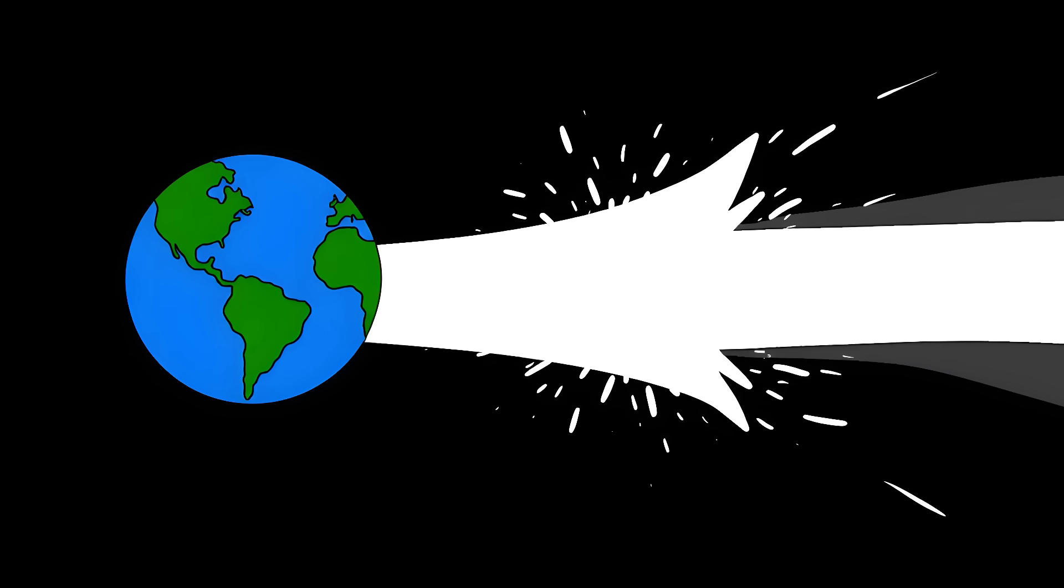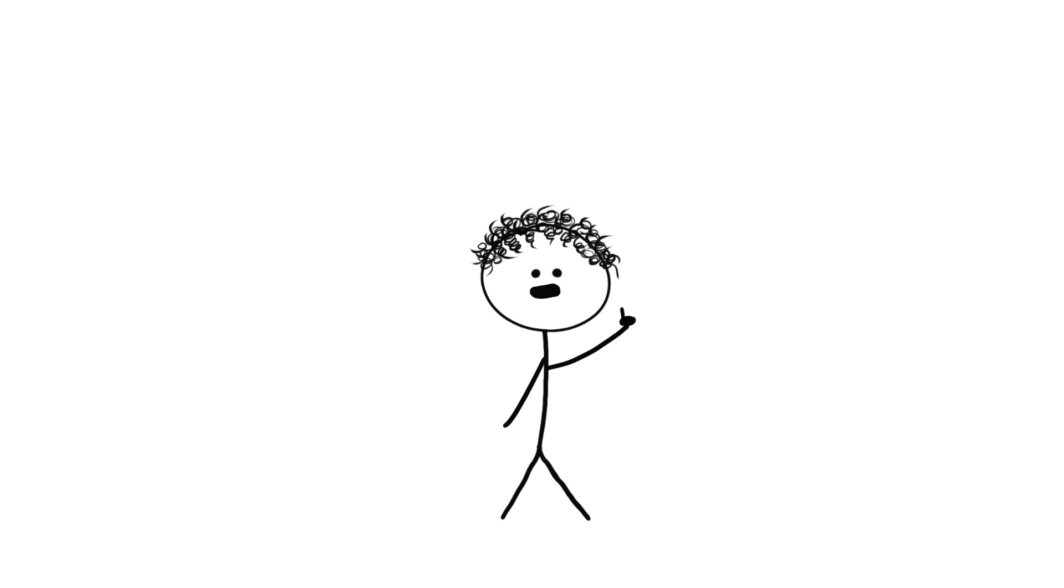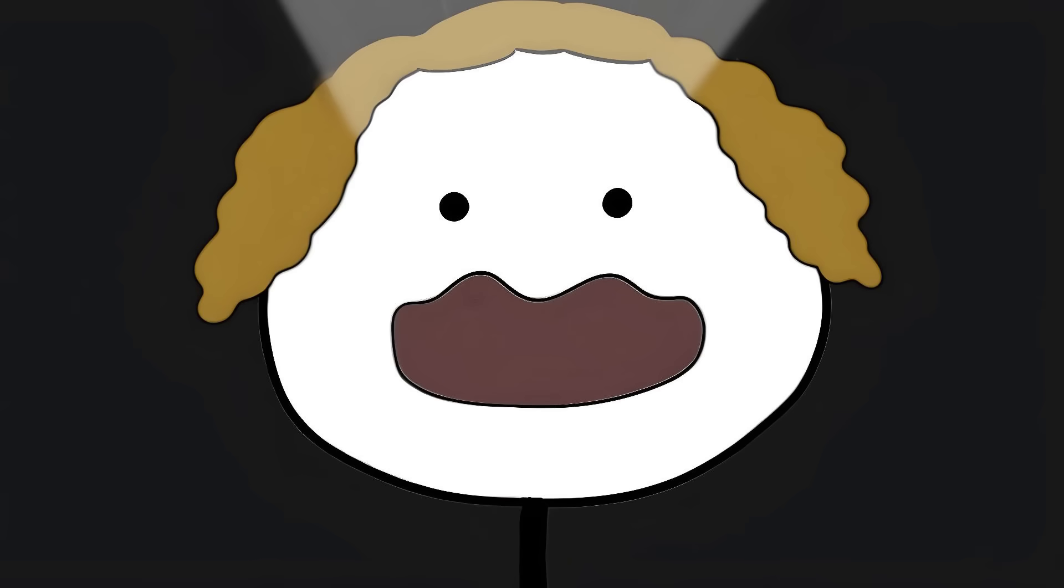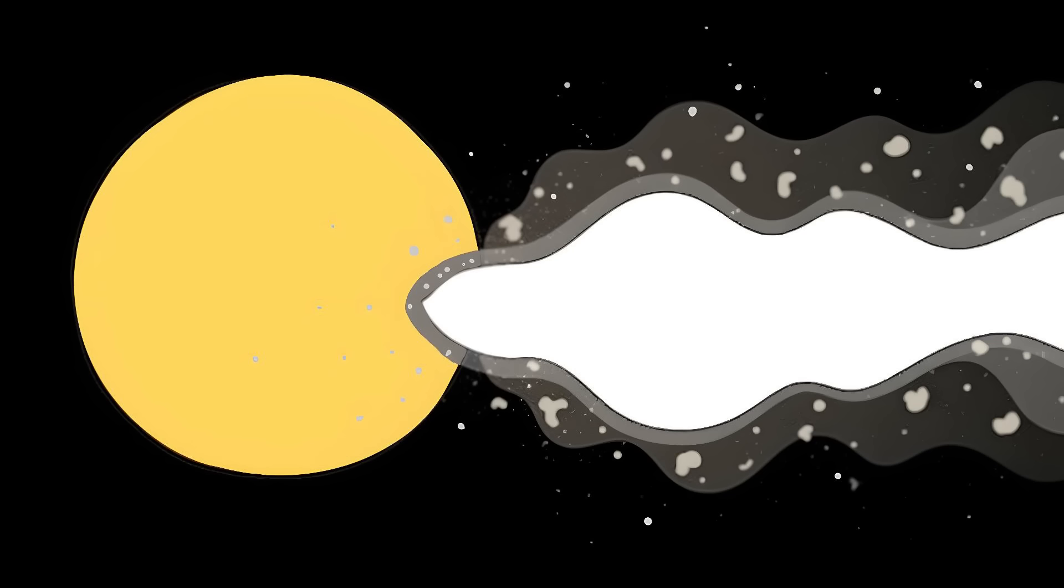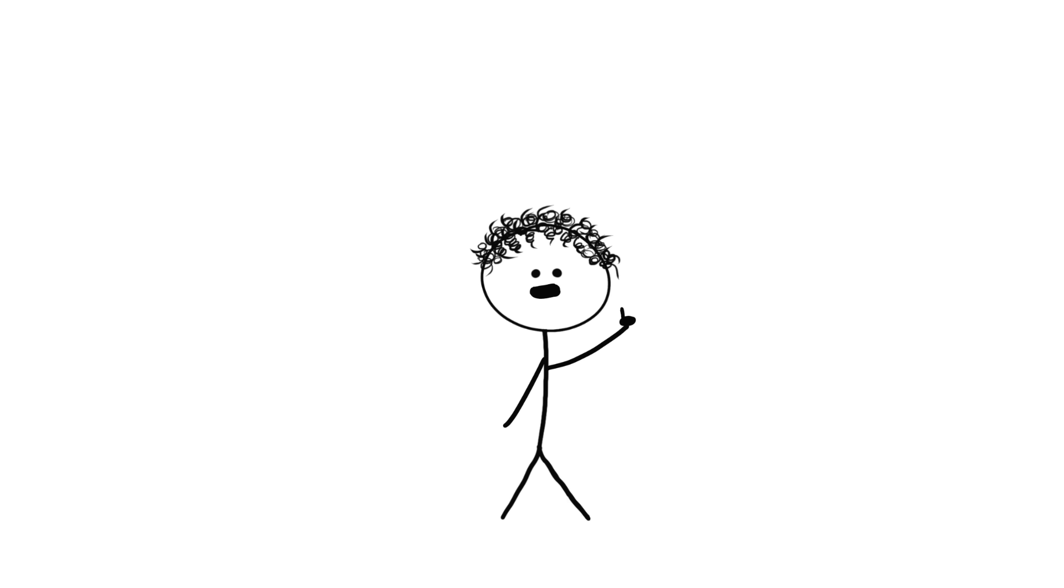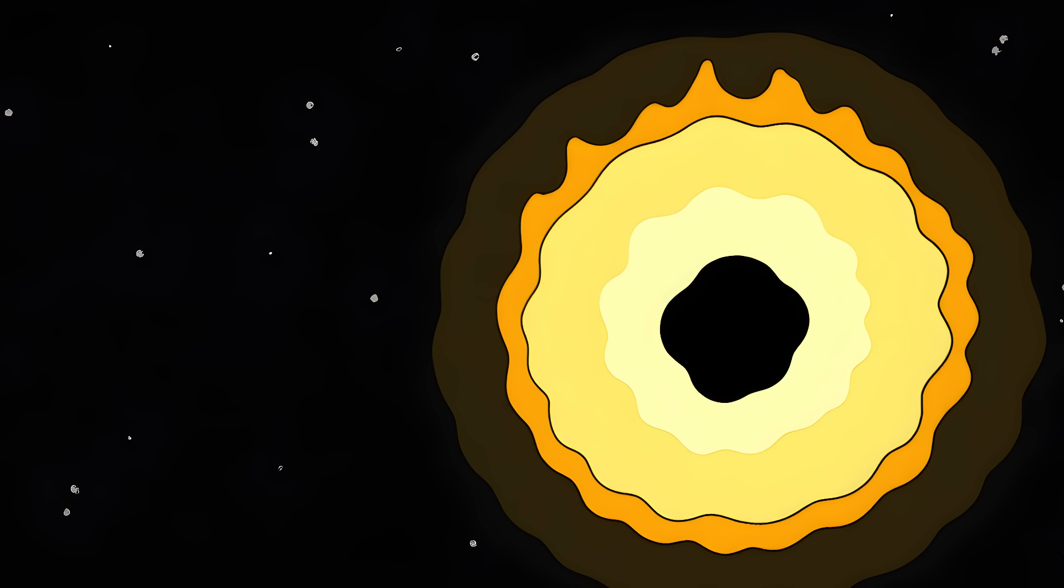Number five: gamma ray bursts. These aren't just little flashes of light—they are the most powerful explosions in the universe since the Big Bang. Our sun has been burning for billions of years. A GRB can blast out more energy in a few seconds than our sun will in its entire 10-billion-year life. These cosmic fireworks usually happen in two ways: when a massive star runs out of fuel, collapses, and forms a black hole, or when two neutron stars smash into each other.